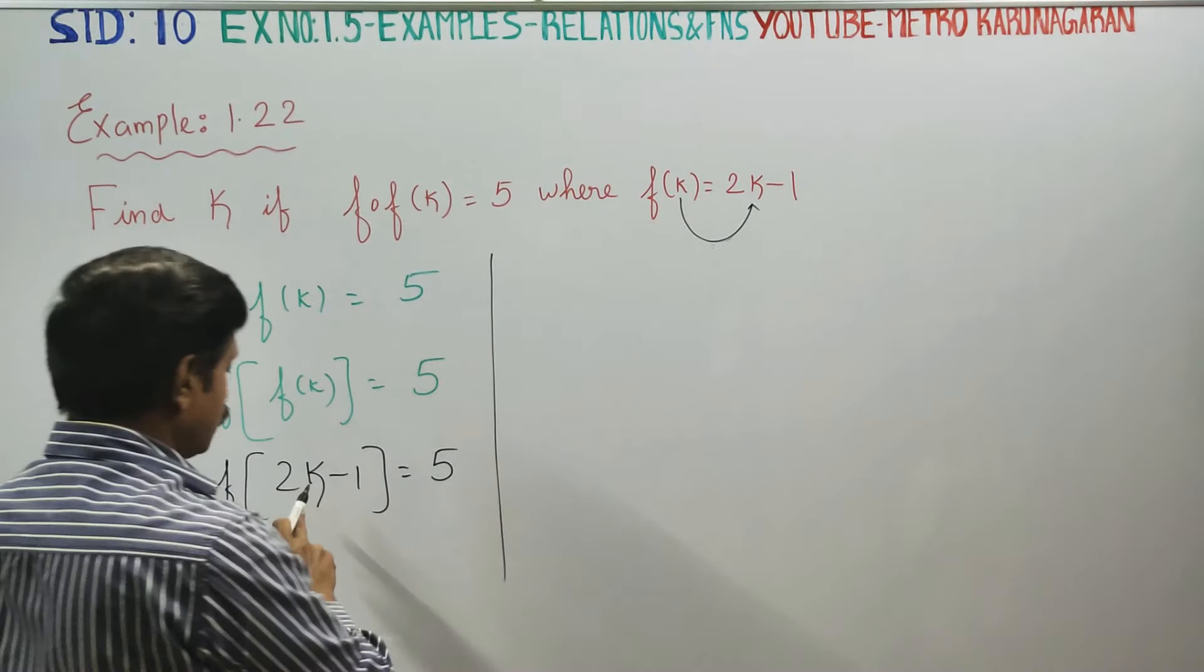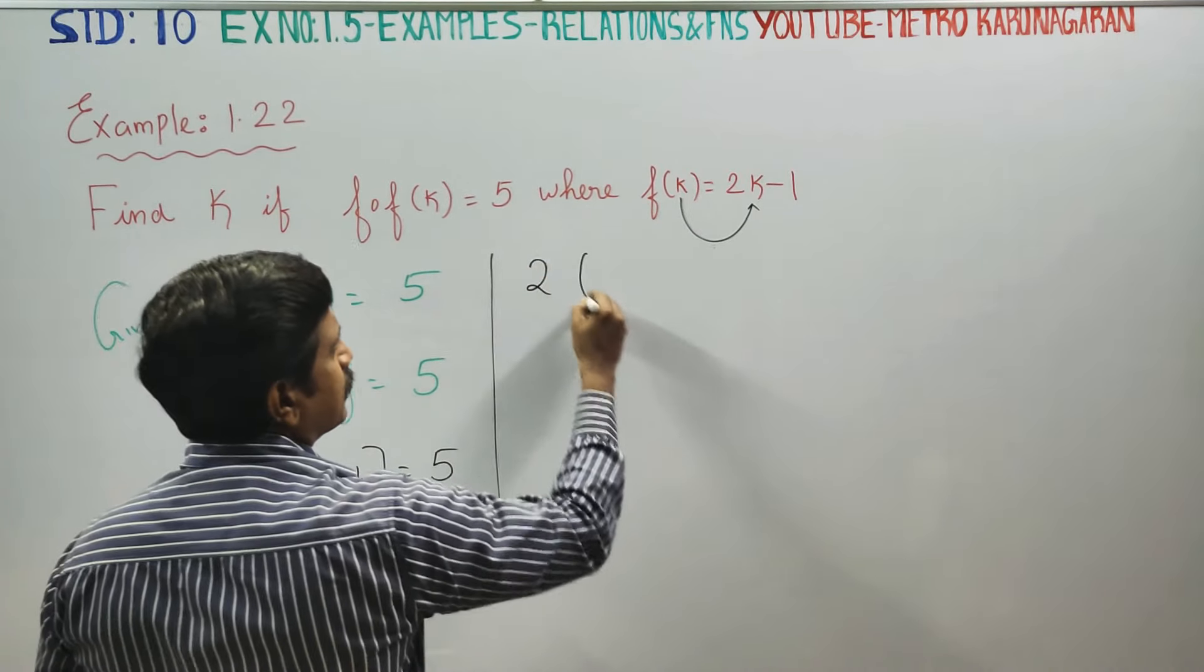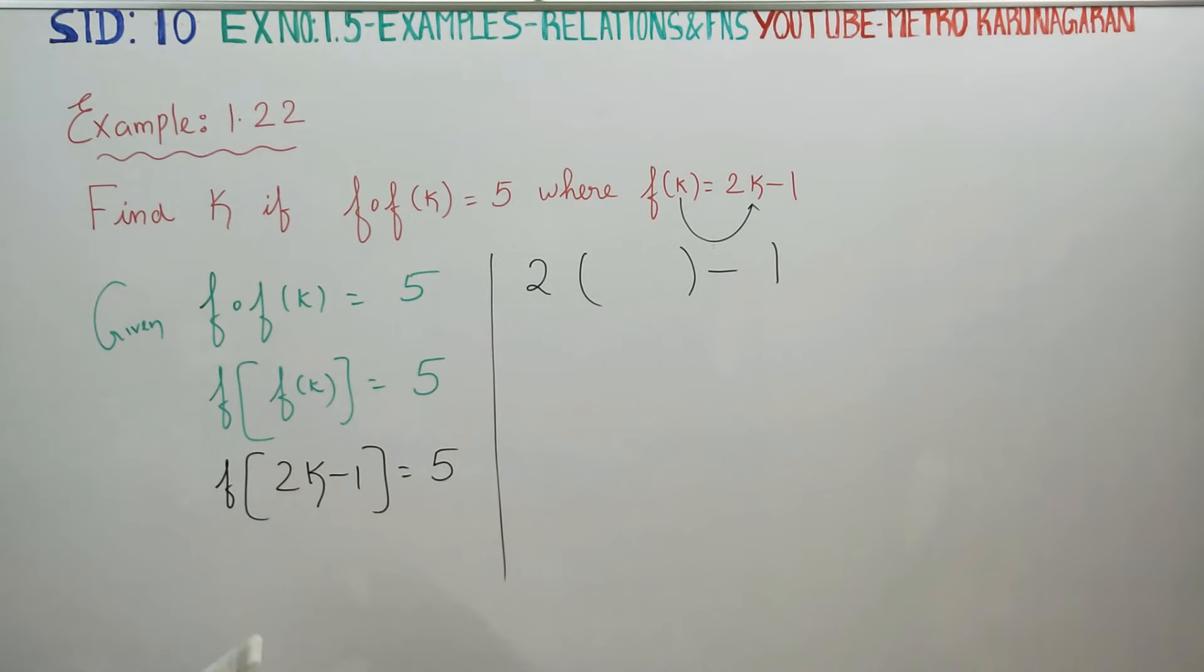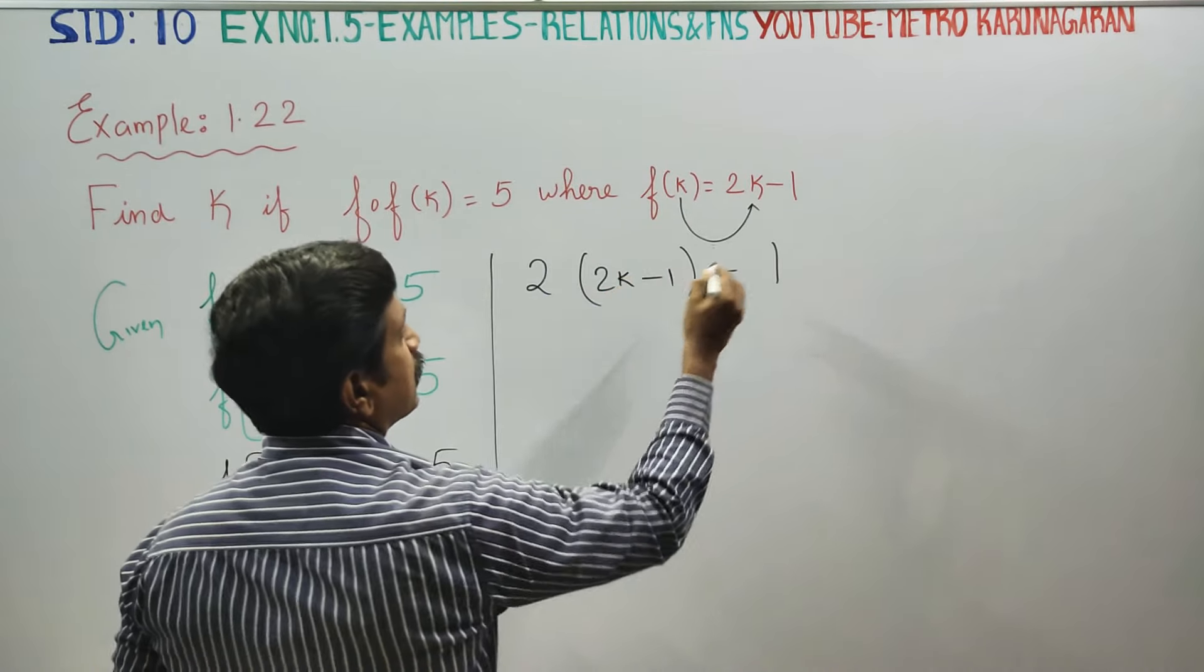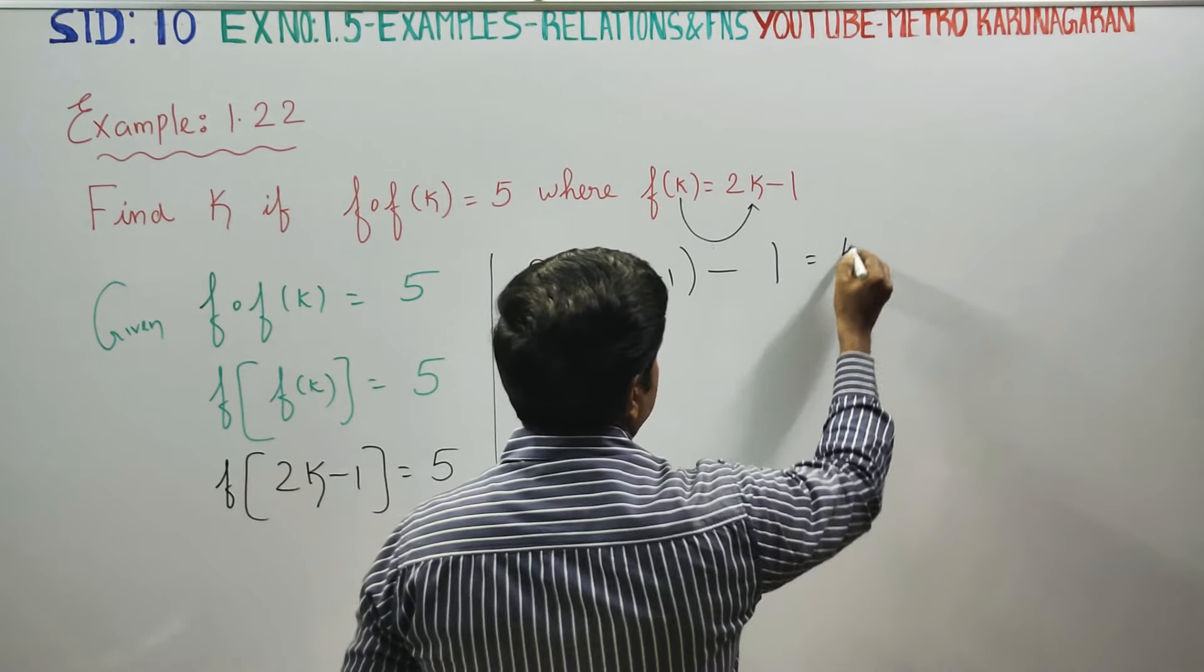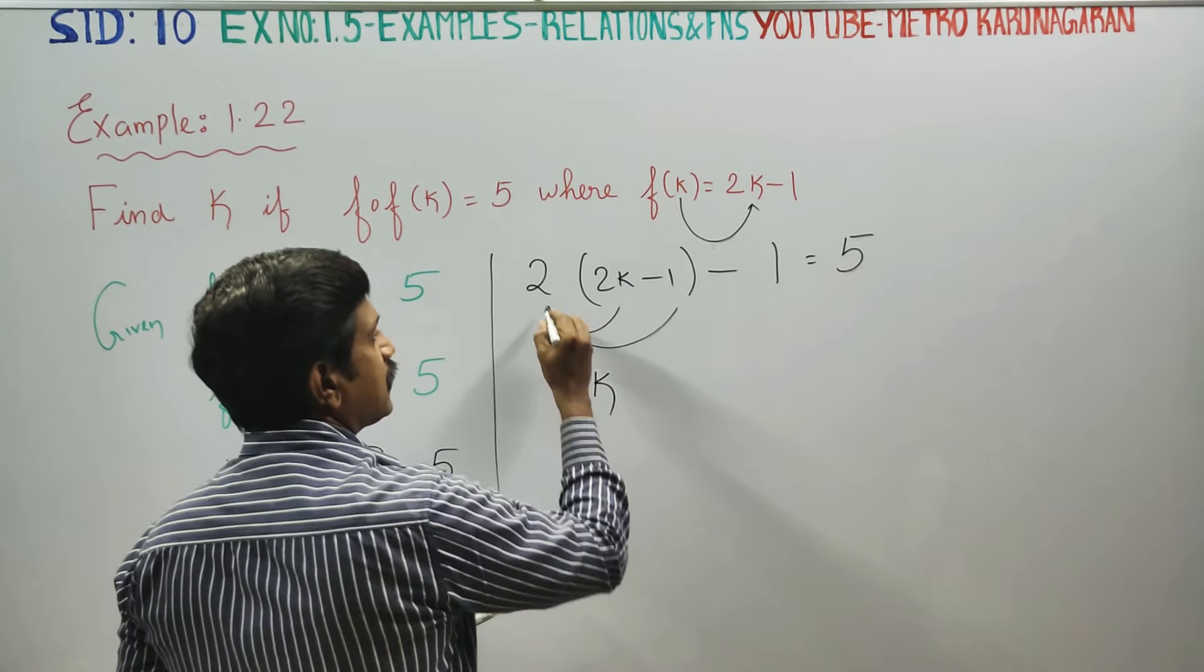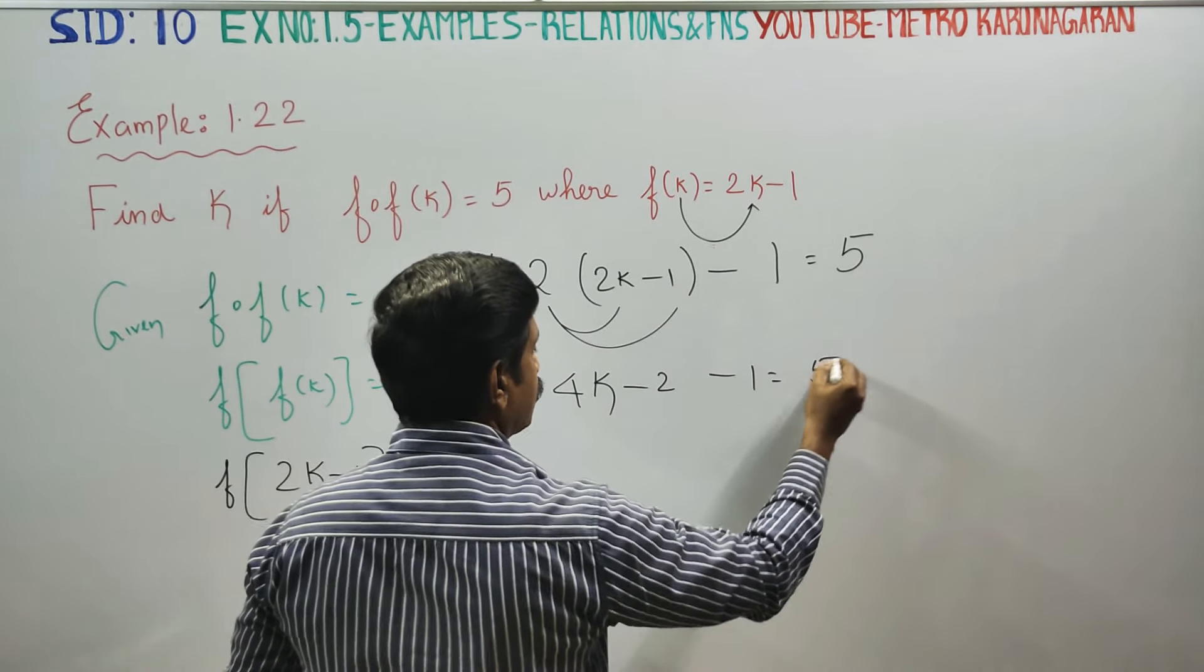f of k is defined by 2k minus 1. Substituting into the composition, we get f of 2k minus 1, which equals 2 times 2k minus 1, minus 1. This simplifies to 4k minus 3 is equal to 5.